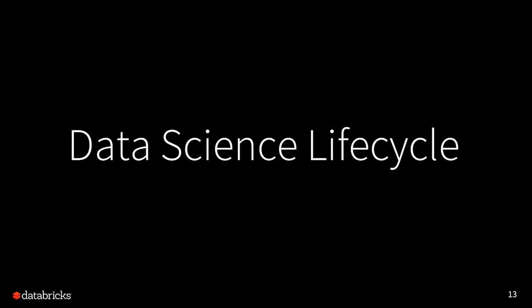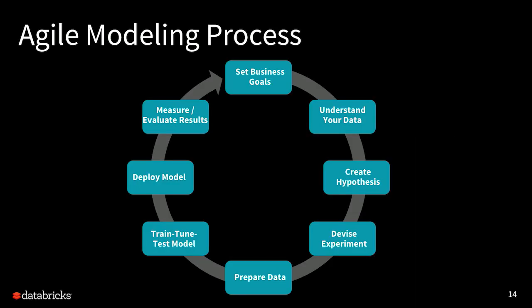Let's talk about the data science lifecycle. This may look familiar to those in software engineering — it's very similar to Agile or Scrum. The first thing is you set business goals, then you understand your data sets, create a hypothesis, and devise an experiment. Once you've done those pieces, you can start to prepare your data, train, tune, and test the model, deploy the model, measure and evaluate results, and rinse and repeat. The key is that it's an Agile process — you're going to learn from your experiments each time you go through this cycle.